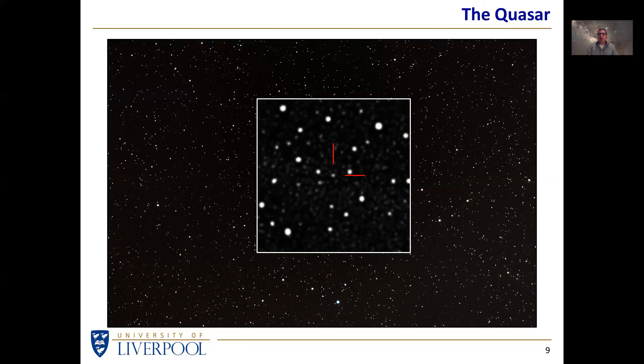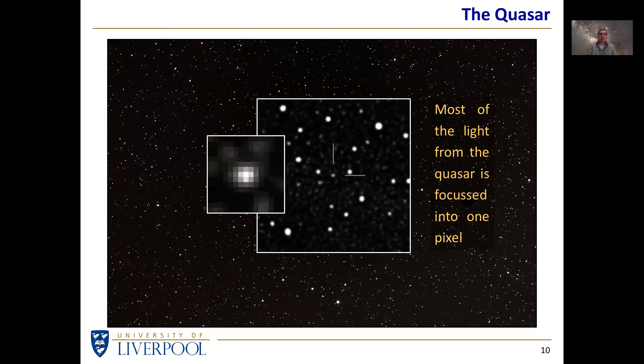Here most of the light from the quasar is focused into about one pixel in the image. If we blow the quasar up still further, we can see that essentially most of the light has gone into that one pixel. I've made some of the fainter pixels just a little bit brighter to make it easier to see. But out of the 20 million pixels, the 20 megapixels of the whole camera image, the quasar is really only that one pixel and maybe just a couple of its neighbors as well.